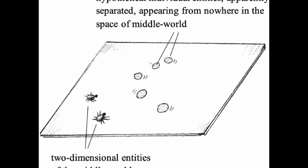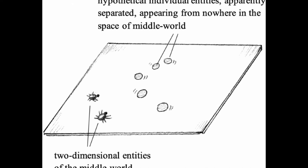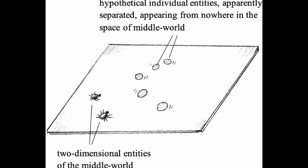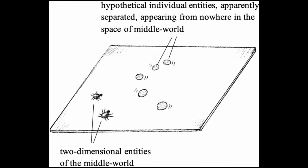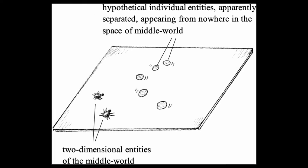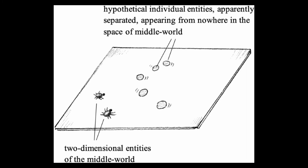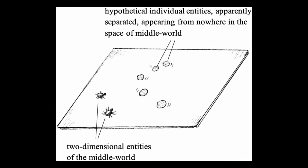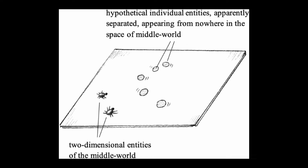Flatland UFO theory proposes that UFOs are actually higher dimensional beings or objects visiting our three-dimensional reality. This concept draws inspiration from Edwin Abbott's book Flatland, which explores how beings from higher dimensions would appear to lower dimensional entities. Proponents argue that the seemingly impossible maneuvers and appearances of UFOs can be explained by their ability to move in four or more spatial dimensions.